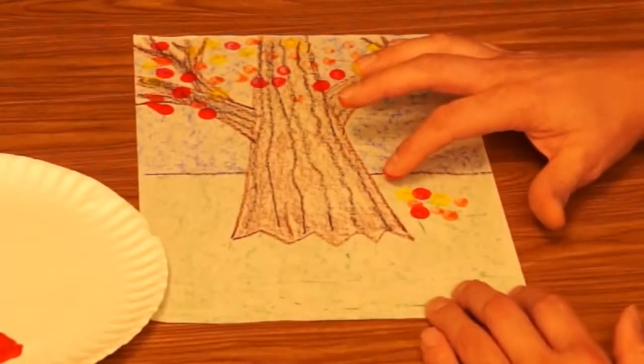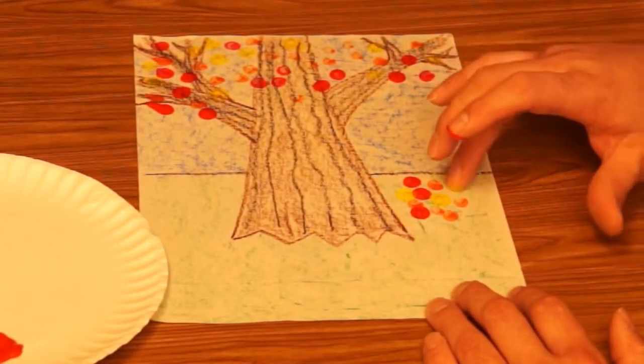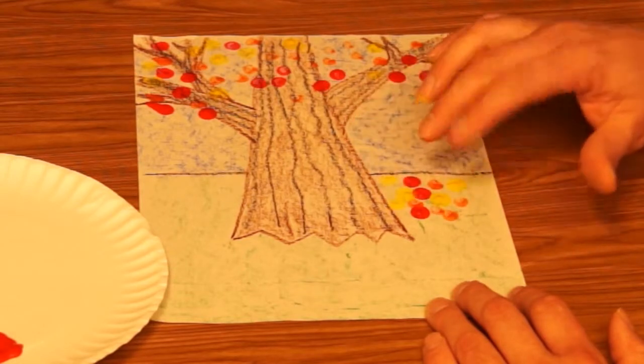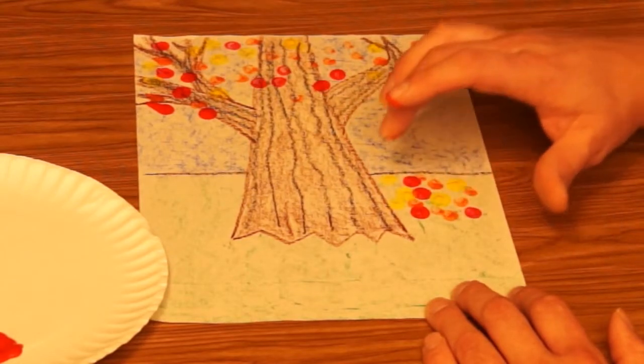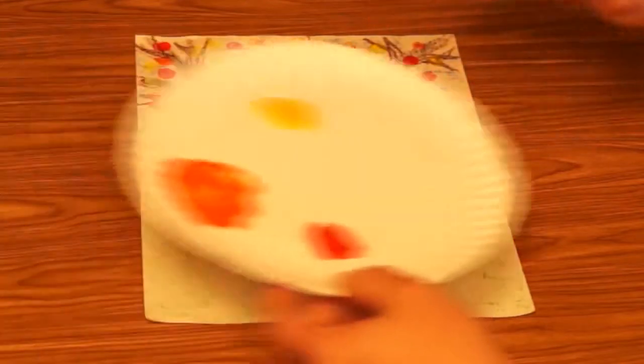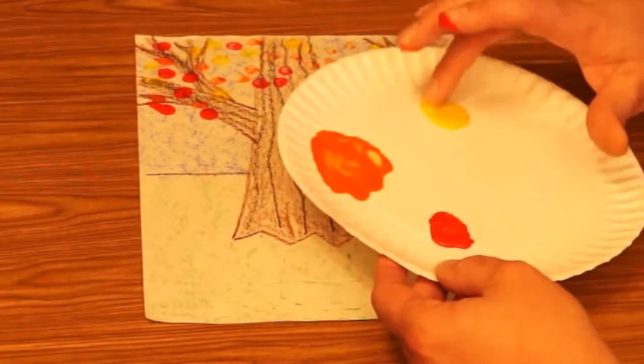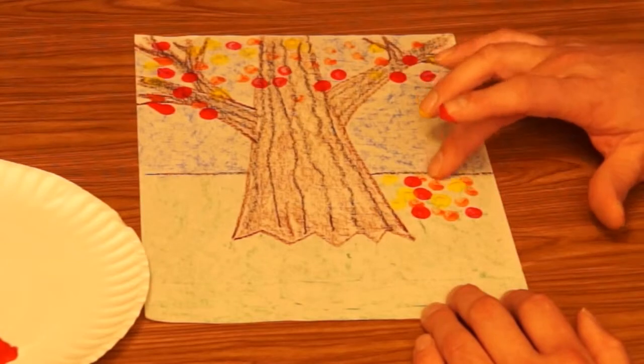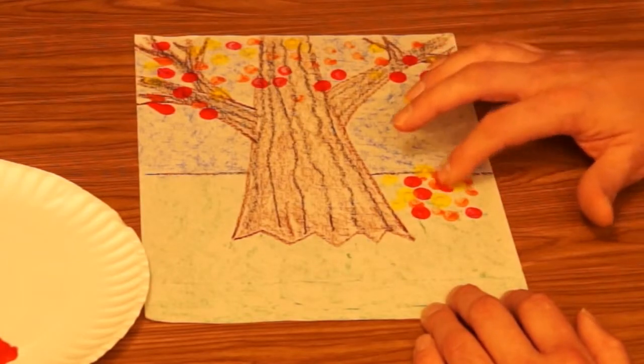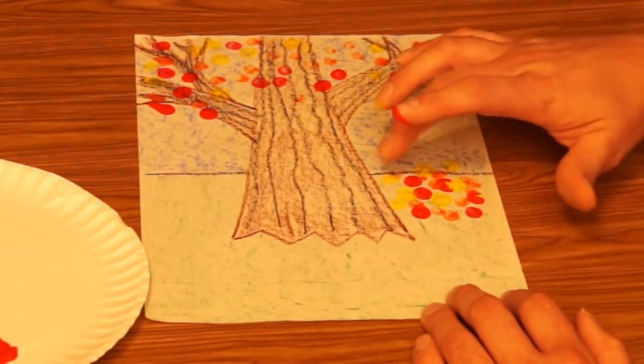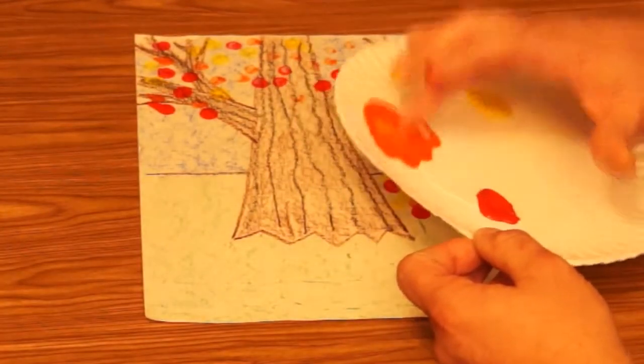Now before you paint, you could actually add some other things to your picture. If you wanted to put animals like squirrels or birds or if you wanted to put other things that you would see outside, you could do that in your picture too. Or you could even draw yourself maybe. After you're done, when this dries, you could draw yourself jumping into the leaves. That might be a fun thing to do.